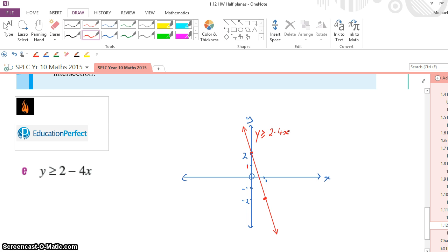Now, the question is, what side of the line do I shade? You can see I've got a solid line, because it was greater than or equal to. What's the last thing I need to do? Test a point. Let's test 0, 0. This gives me 0 is greater than or equal to 2 minus 4 times 0. 0 is greater than or equal to 2 is not correct.